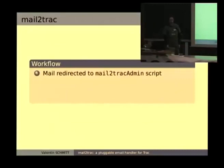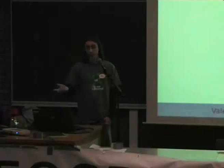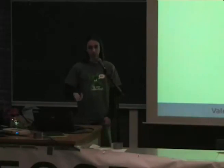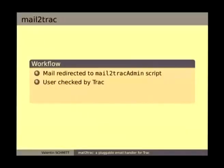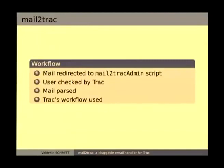The workflow of Mail2Trac: when you send a mail, it's redirected to a small bash script which is called by the trac-admin command, which then calls the Mail2Trac script. The email is then checked against known users by Trac, giving authentication to perform actions or not. The whole mail is parsed by Mail2Trac to check fields and get the action to actually perform. Then it uses the Trac workflow to perform this action.